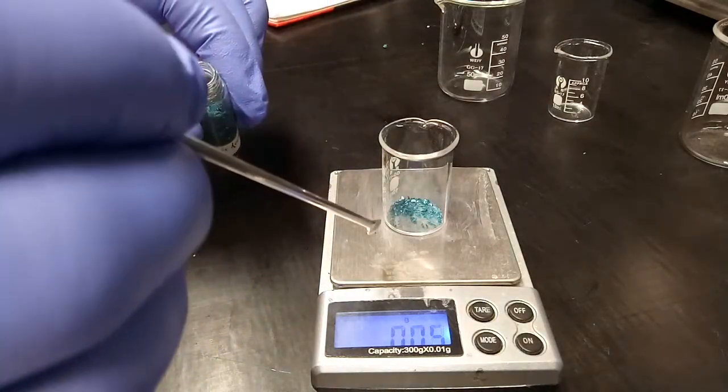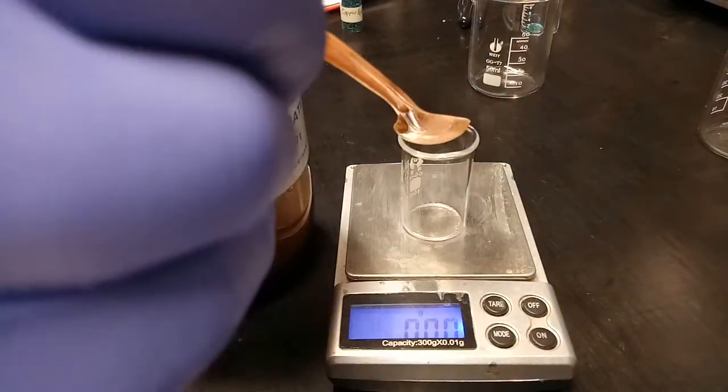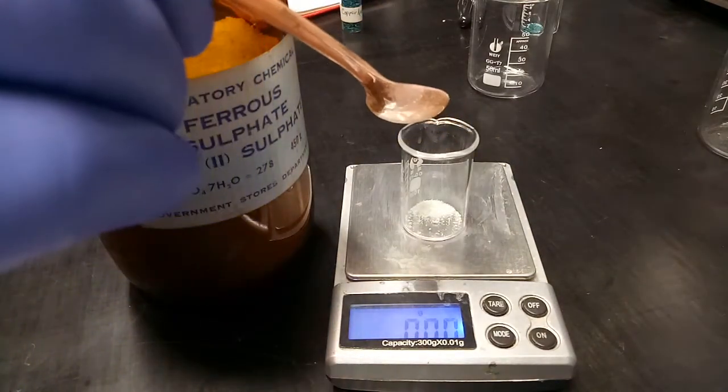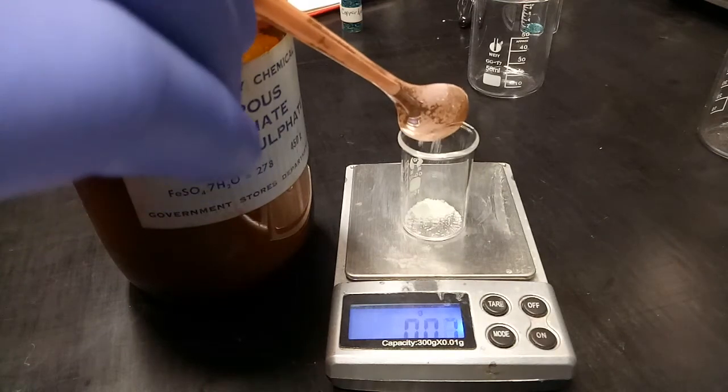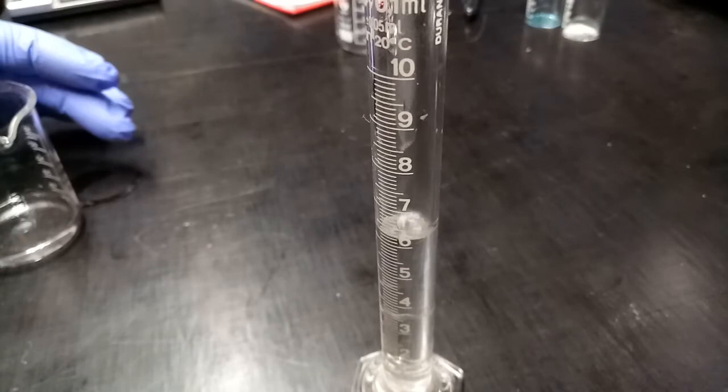Now I won't pretend I understand the mechanism behind the reaction. It is an oxidation, but beyond that I'm not really sure what's going on with the two catalysts that he used. We've got about 0.1 gram of copper acetate and another 0.1 gram of ferrous sulfate used as a catalyst.